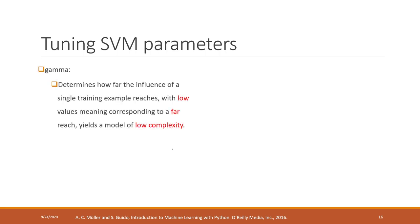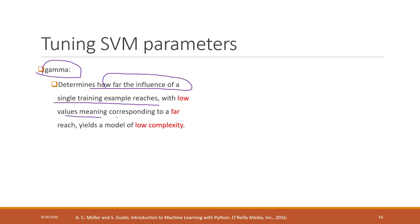Some important parameters help us find that balance. The first parameter is called gamma. Gamma determines how far the influence of a single training example can reach. Low values correspond to a far reach, meaning the model will be less complicated. Low gamma indicates far reach and a less complicated result.